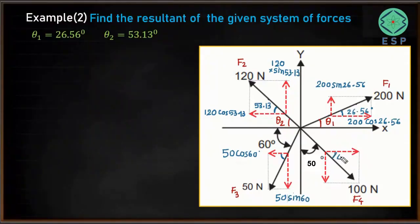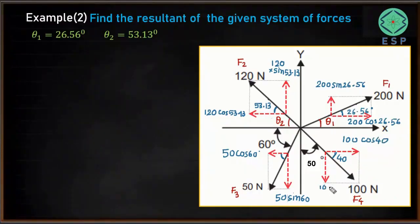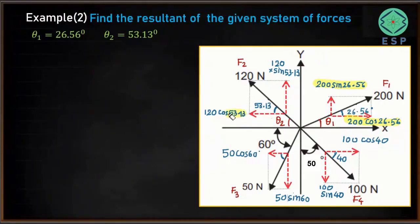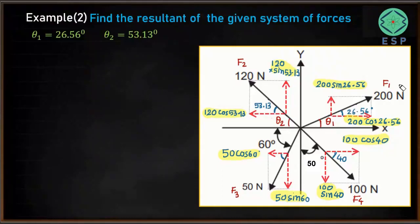For the 100 Newton force (F4), this angle is 40 degrees, so the x component is 100 cos 40. All the given forces — 200, 120, 50, and 100 Newton — have now been resolved along both the x and y directions.